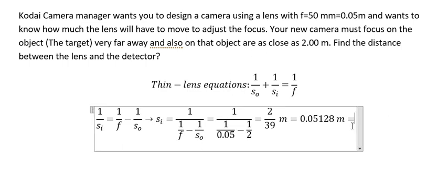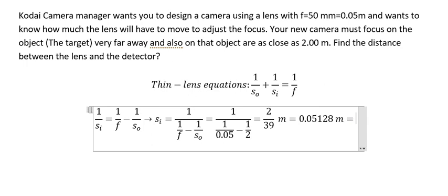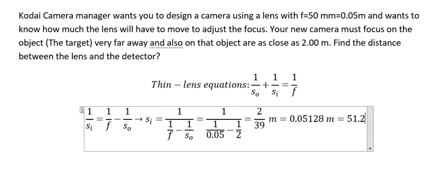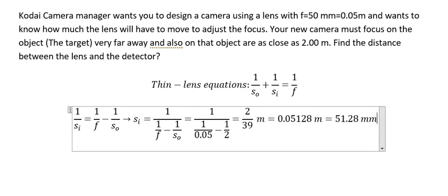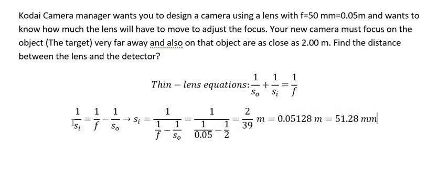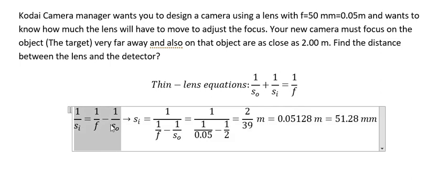So the image distance Si is approximately 0.05128 meters, which is about 51.28 millimeters. That is the first case — the object at 2 meters.